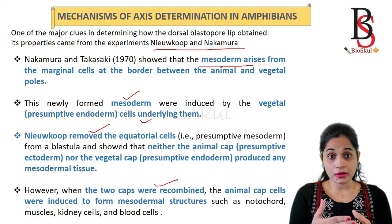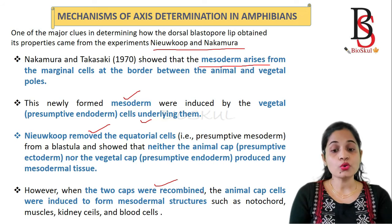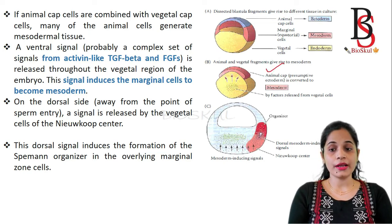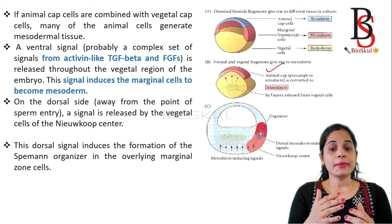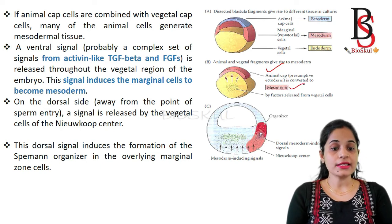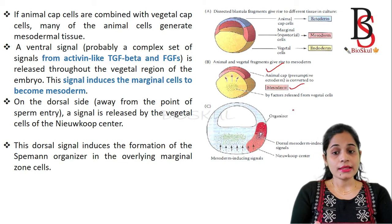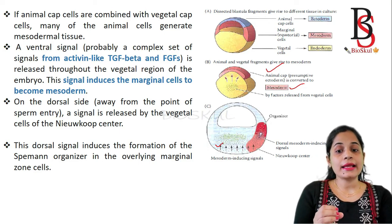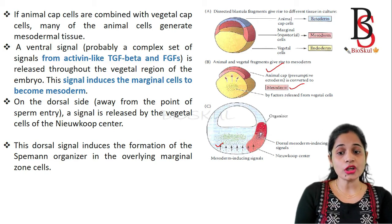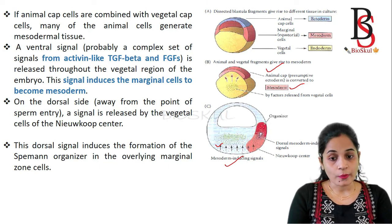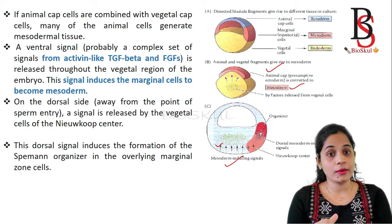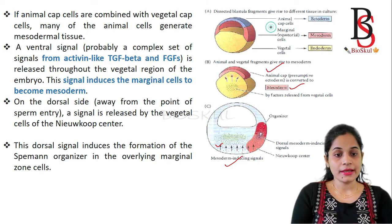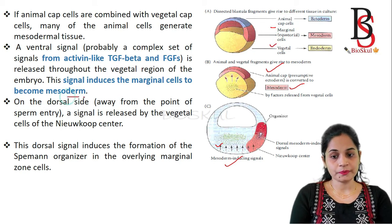But when the two caps are recombined, the animal cap cells are induced to form mesodermal structures. When the animal cap is combined with the vegetal cap, many of the animal cells are converted into mesoderm. The ventral signal — a complex set of signals from activin-like TGF-beta and fibroblast growth factor — is released throughout the vegetal region and induces the marginal cells, present between the animal and vegetal caps, to become mesoderm.